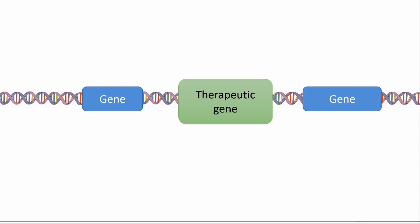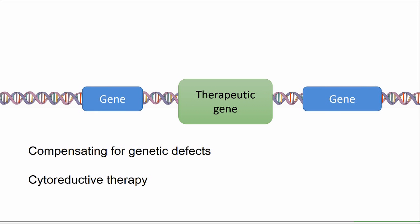Viruses can be used as vectors to deliver this therapeutic gene. Gene therapy can have several different purposes: to compensate for genetic defects; cytoreductive therapy, in which cancer cells are reduced or stopped from dividing; tissue engineering, in which tissues are engineered to function in a desired way; or immunostimulatory therapy, in which cancer cells are engineered to be destroyed by the immune system. In addition to using oncolytic viruses to kill cancers, viruses can also be used as vectors for other genetic diseases.